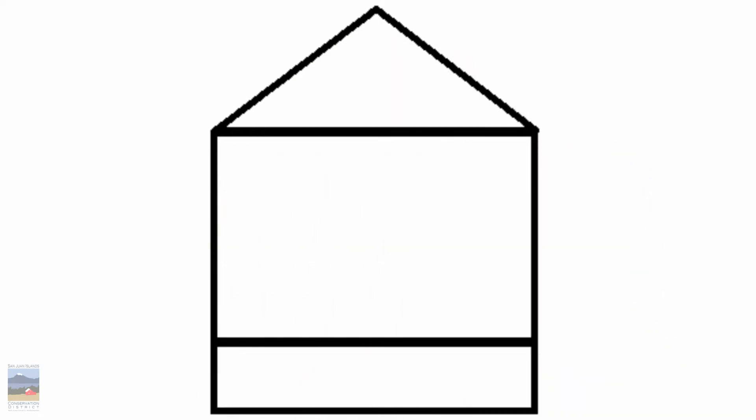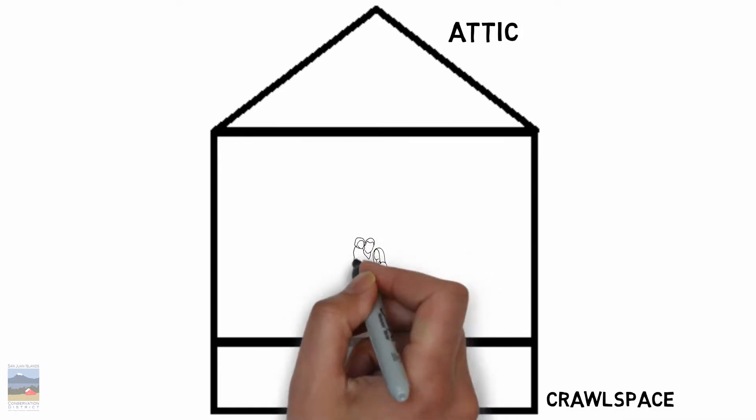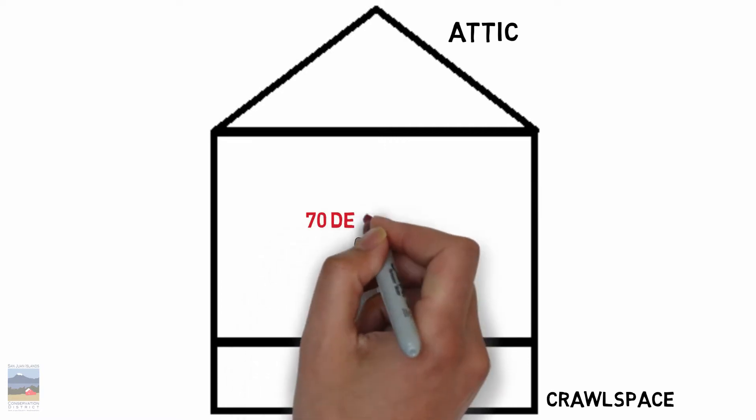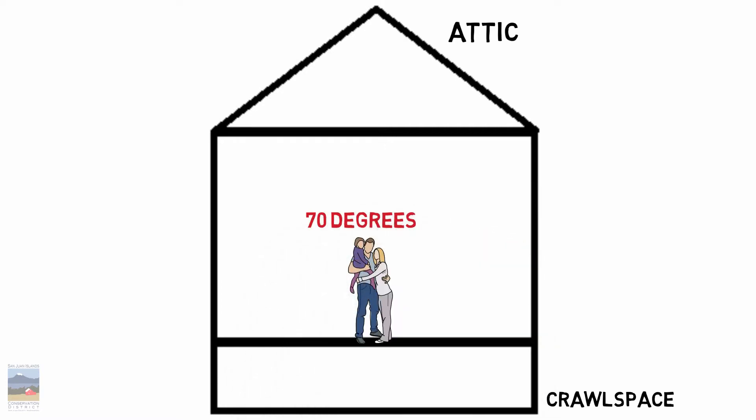So here's our box. We're going to give this house an attic. And we'll give it a crawl space too. So that's a house, right? We all get the idea. So we're inside here and we want it to be 70 degrees.